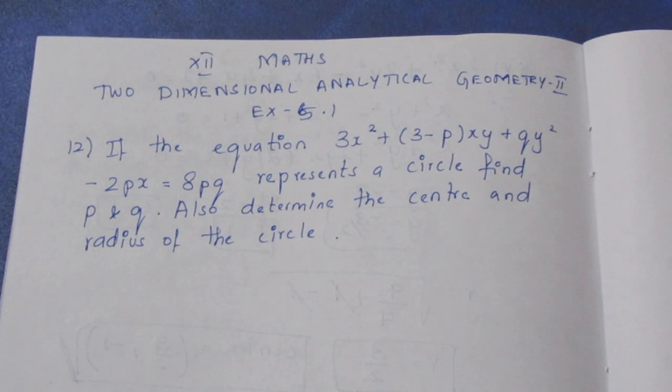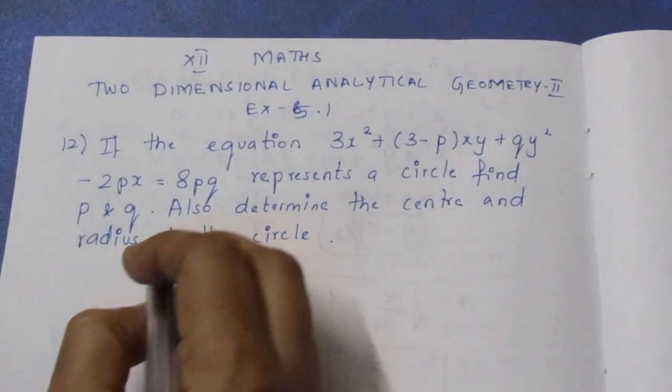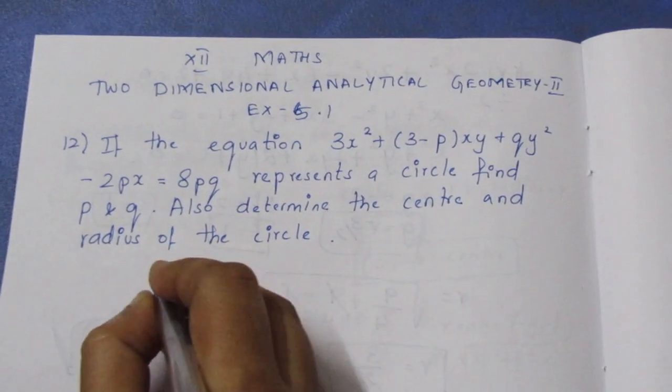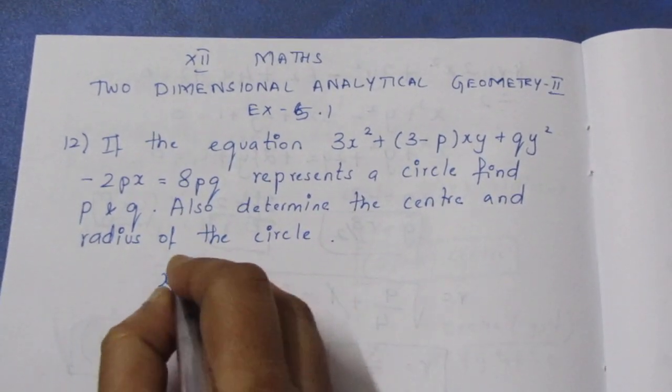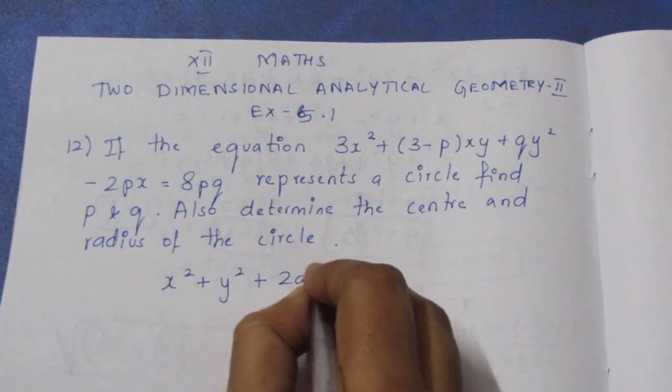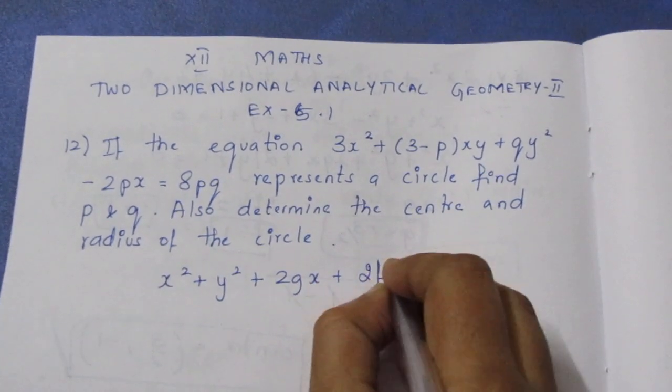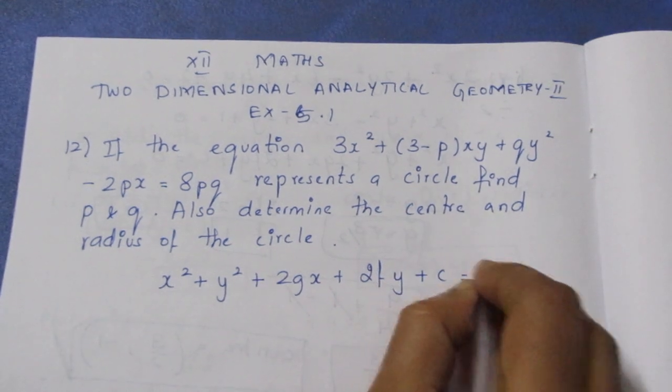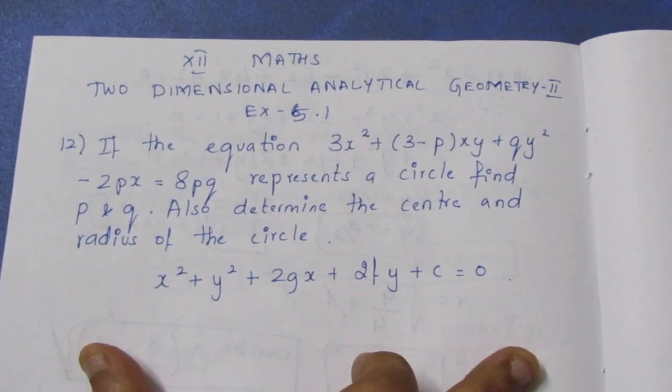This is a circle. We will use the general form of a circle. The general form is x² + y² + 2gx + 2fy + c = 0. This is the general form of a circle.